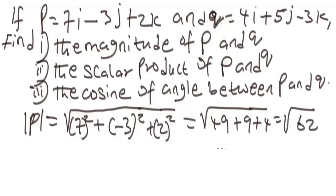When you break this down, square root of 62 will give us 7.87. Let's leave it in two decimal places. So this will be the magnitude of vector P. Now let's solve for the magnitude of vector Q.